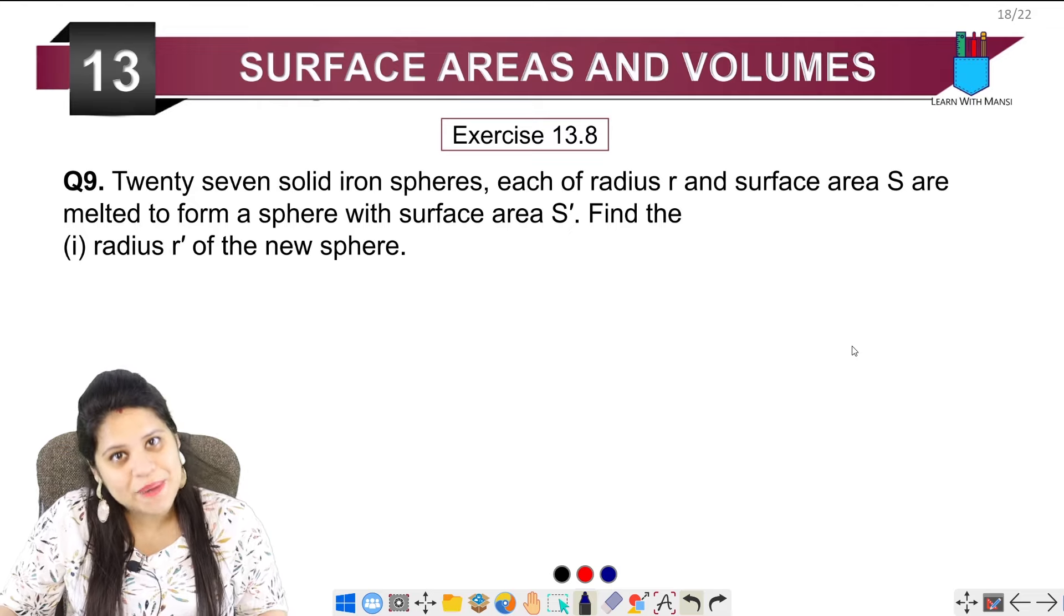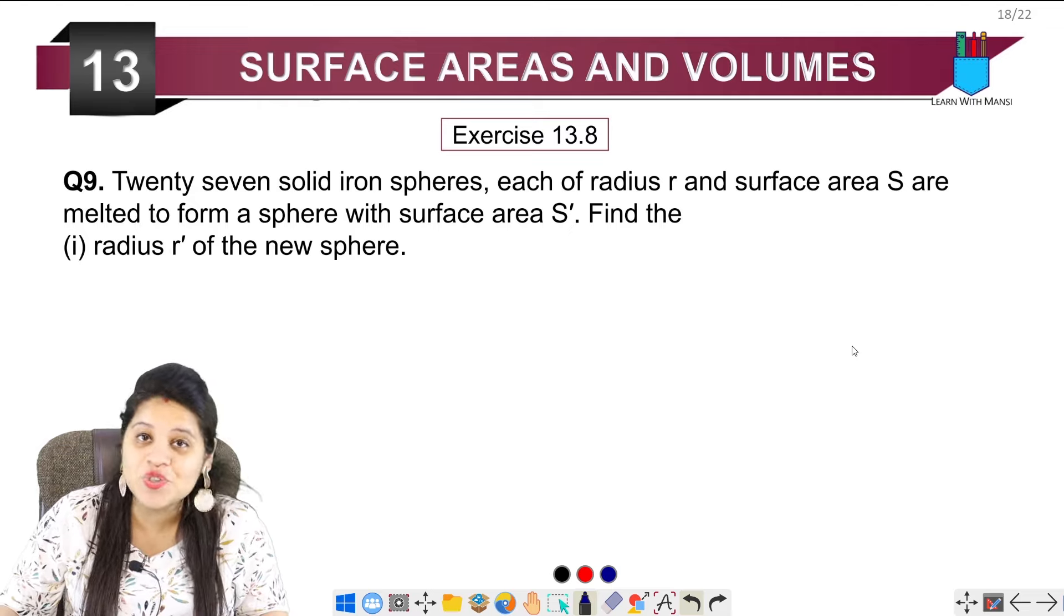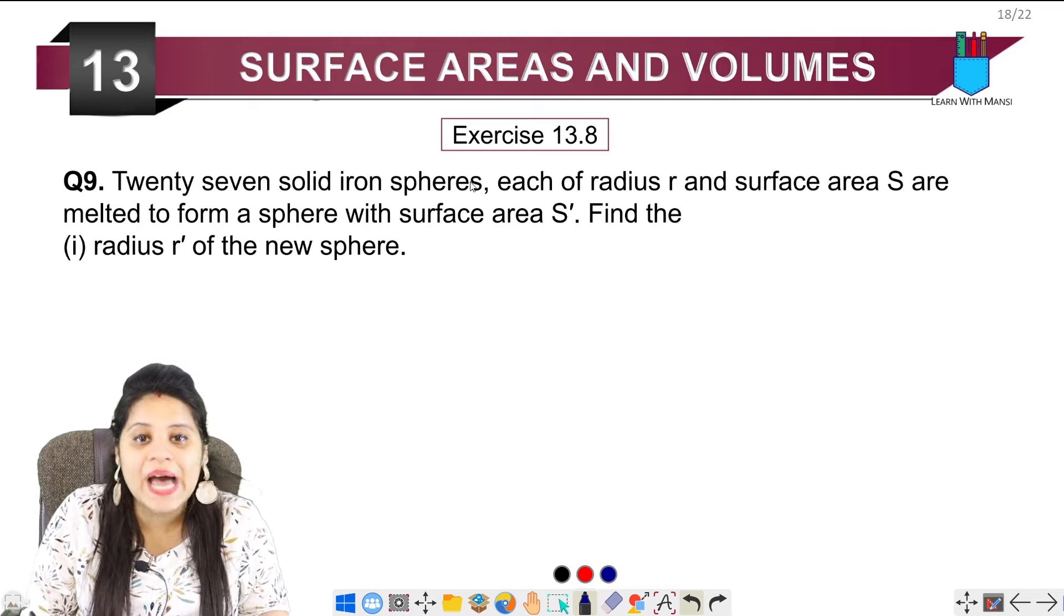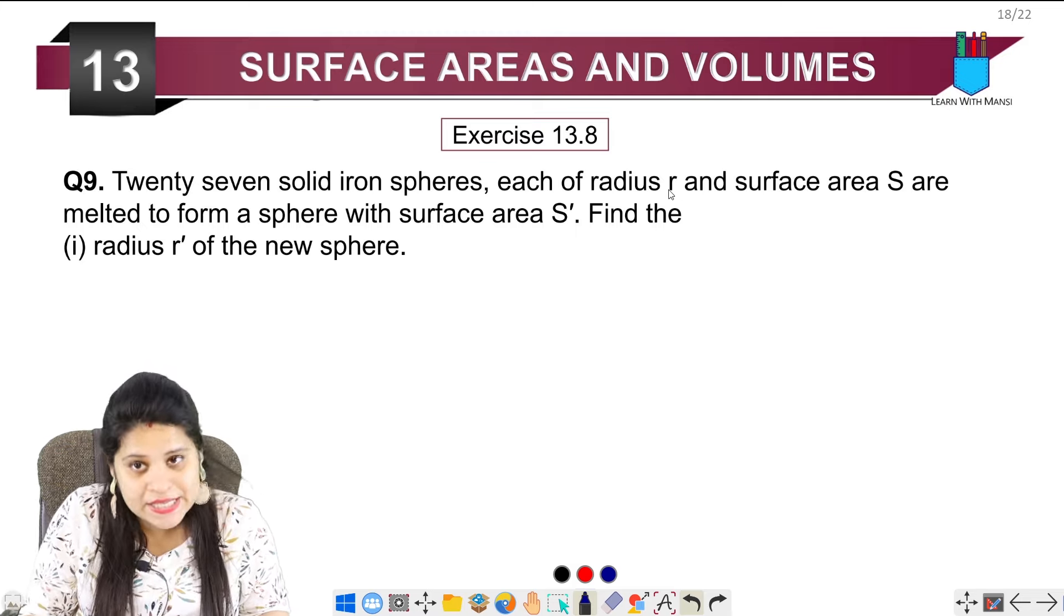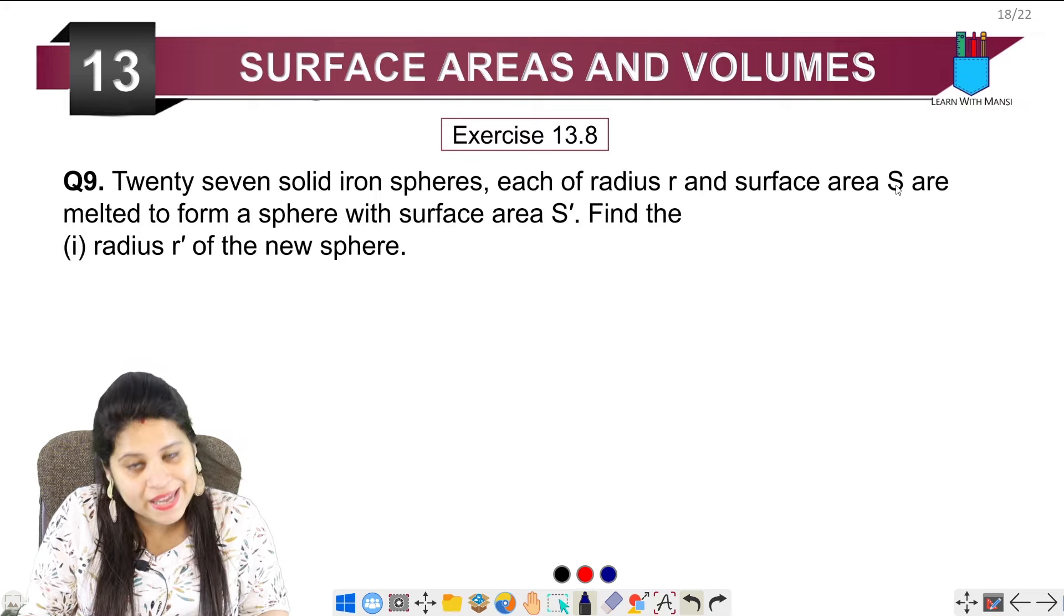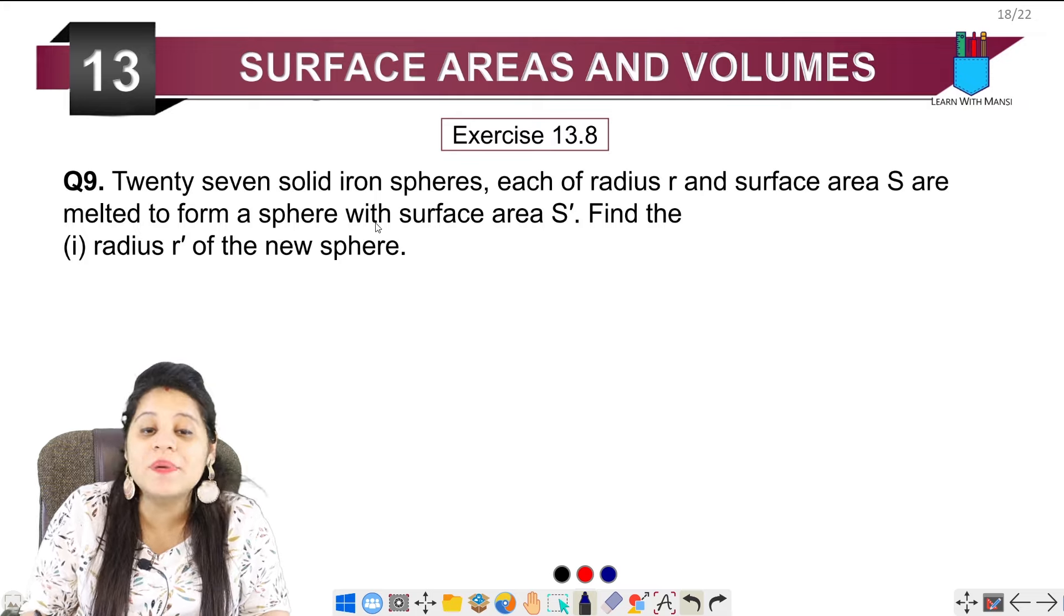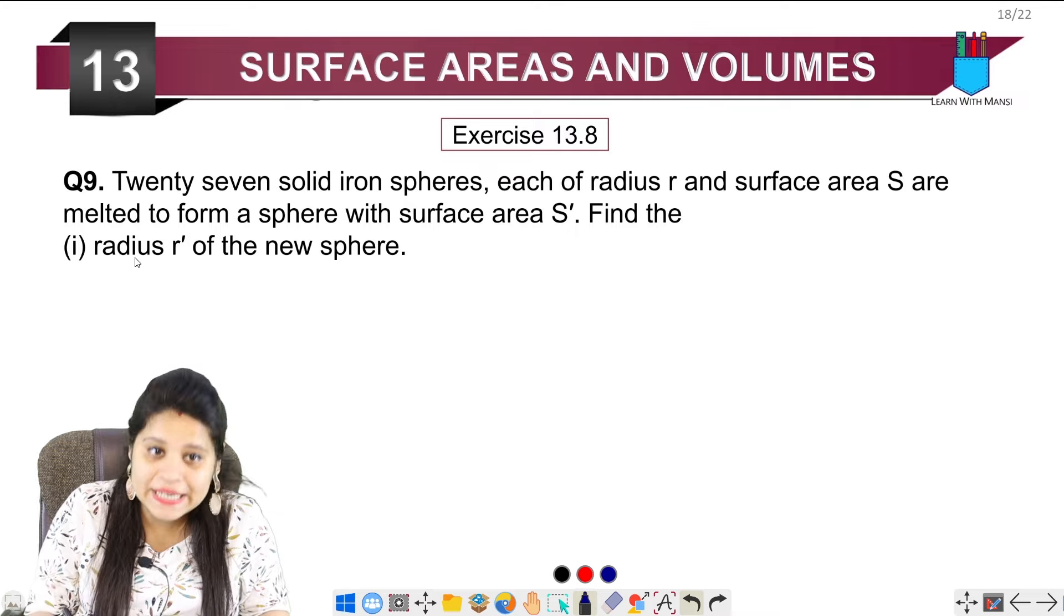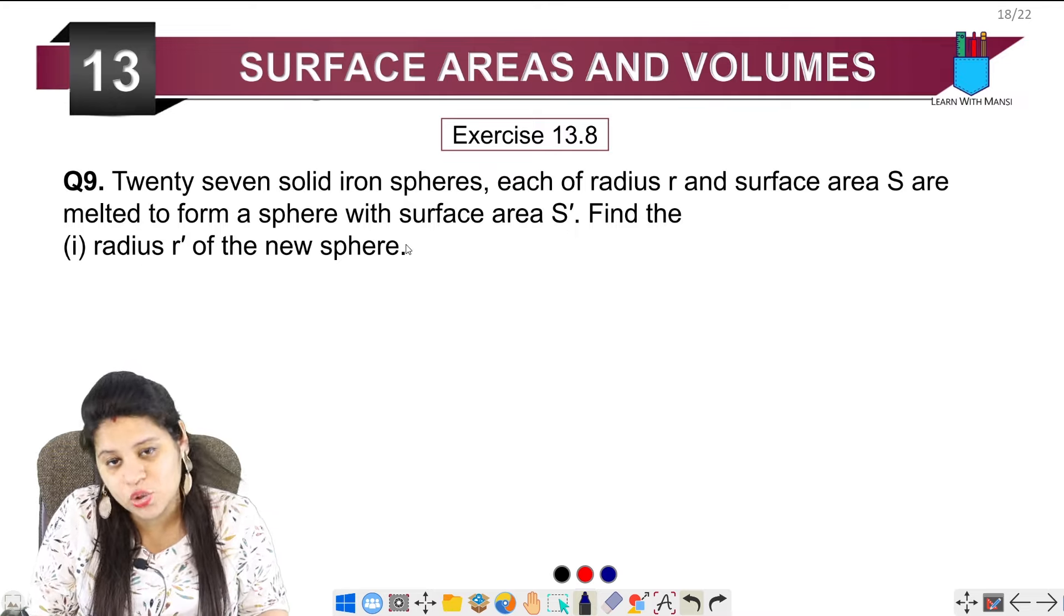Hello everyone, this is Mansi. Welcome back to the channel. We are on the 9th question of exercise 13.8. The question says, 27 solid iron spheres, each of radius R and surface area S, are melted to form a sphere with surface area S dash. Find the radius R dash of the new sphere.